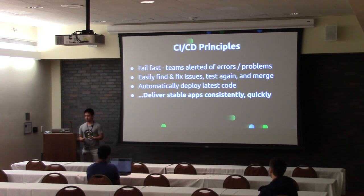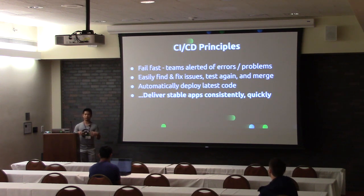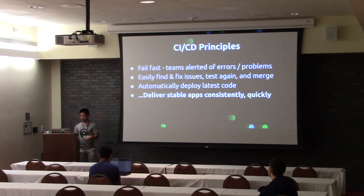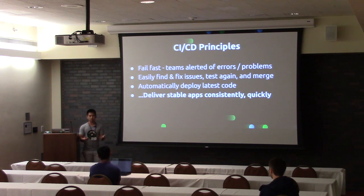CICD together culminates in essentially the main principle of: fail fast. If there is a problem, you discover it sooner, deal with it quicker, easily find and fix these issues, test again, and merge stable code into your main branch automatically. After that, you automatically deploy the latest code with the latest changes. All of this culminates in delivering stable apps consistently and quickly, which means more productivity for your team and ultimately more money for your company.